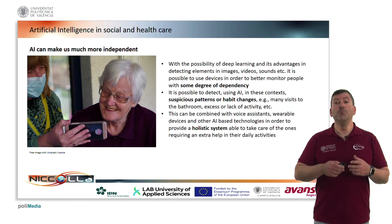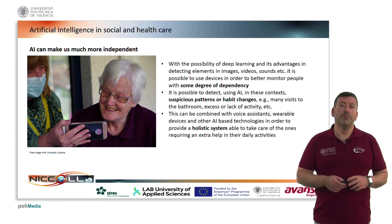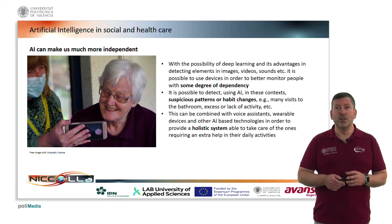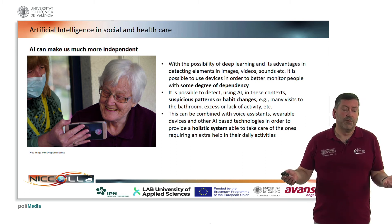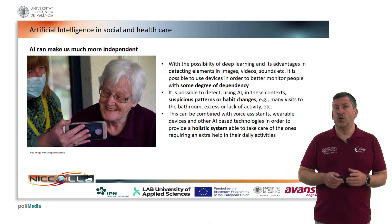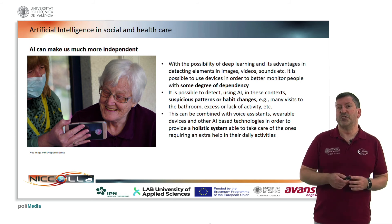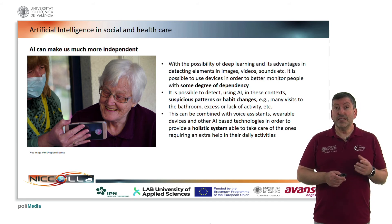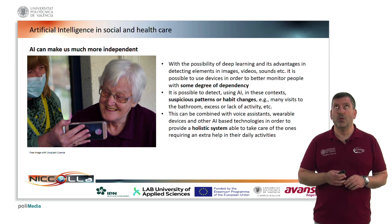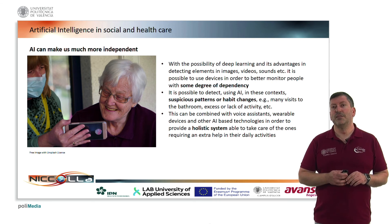AI can make us much more independent at home. With the advantages of deep learning in detecting elements in images, videos, and sounds, it is possible to use devices to better monitor people with some degree of dependency. It is possible to detect suspicious patterns or habit changes — for example, many visits to the bathroom, or an excess or lack of activity — and automatically warn caregivers or professionals that something may be happening. This can be combined with voice assistants, wearable devices, and other AI-based technologies to provide what we call a holistic system, able to take care of those requiring extra help in their daily activities.